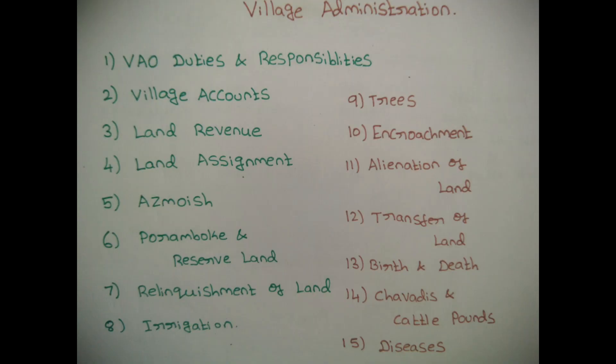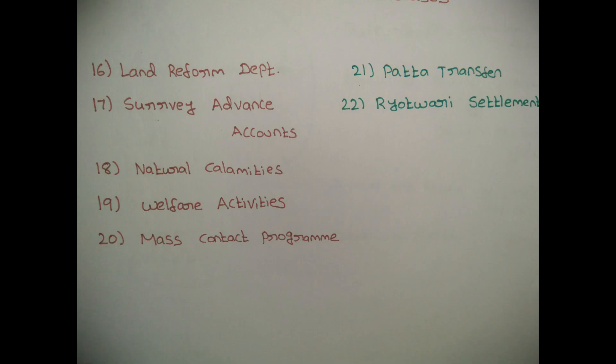How can we control diseases? How can we treat diseases and prevention? Next one is Land Reform Department. In the 1916 year, we have rules. If you have 5 people in a family, we have 30 acres of land. If you have a member, you can have 5 acres. If you have a family, you can have 60 acres. Let's study the Land Reform Department.